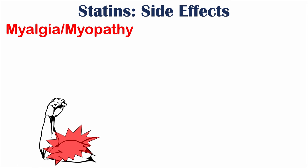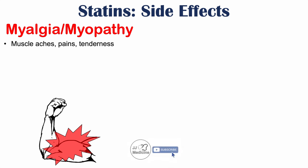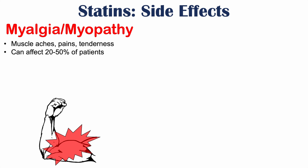One of the main side effects of statin medications is myalgia or myopathy. Myalgia is muscle pain and myopathy is muscle disease. Symptoms include muscle aches, pains, and tenderness, and in some cases severe pain. This is relatively common, affecting 20% to 50% of patients.